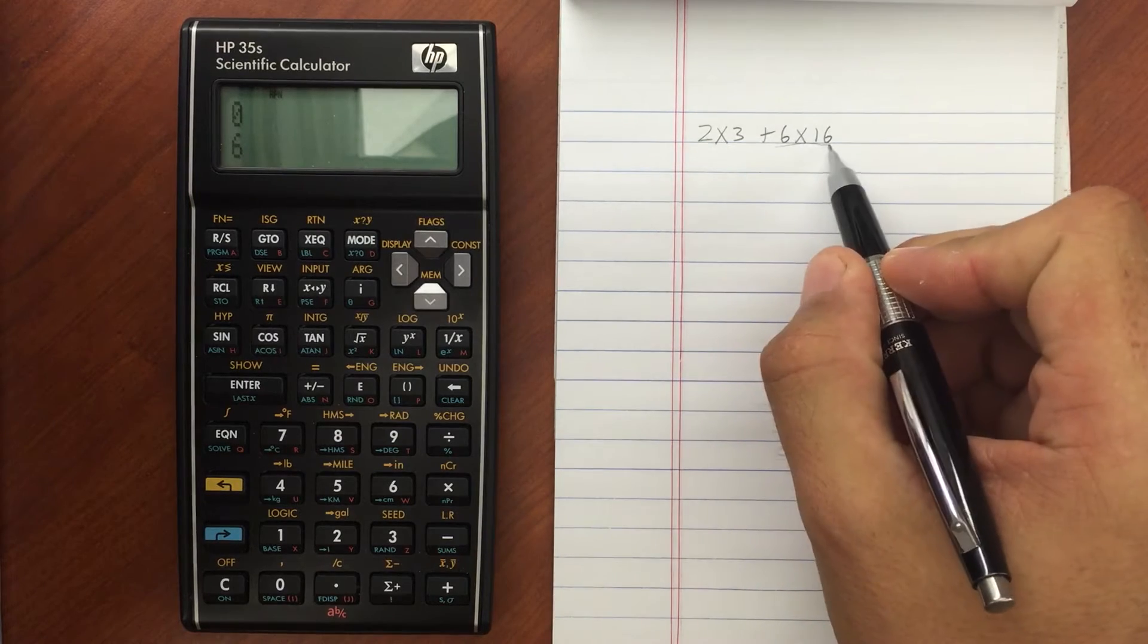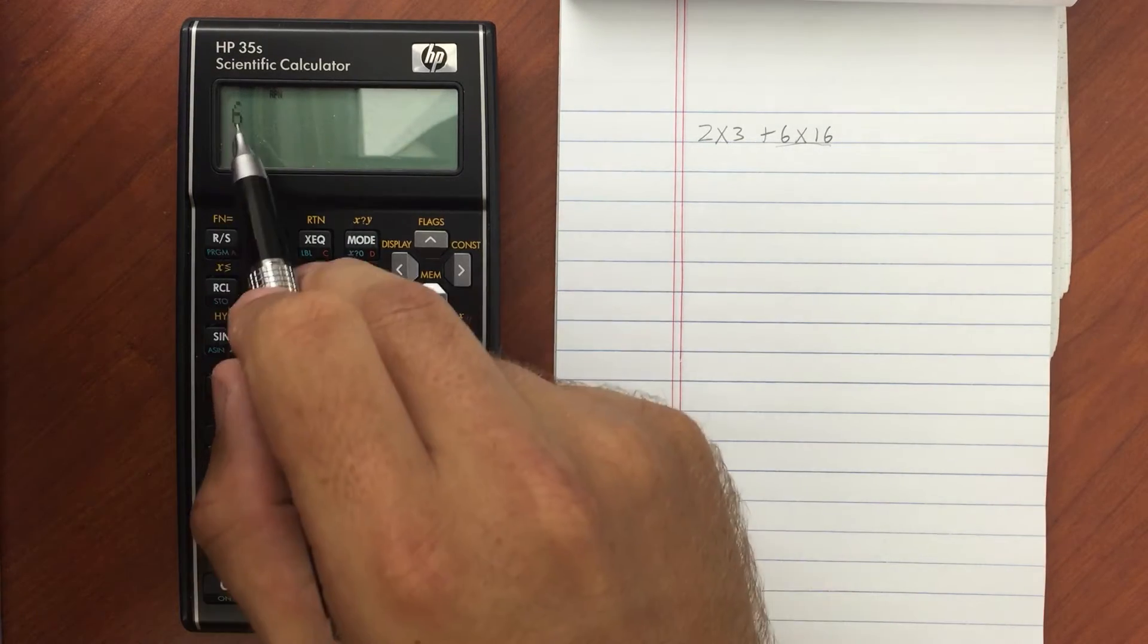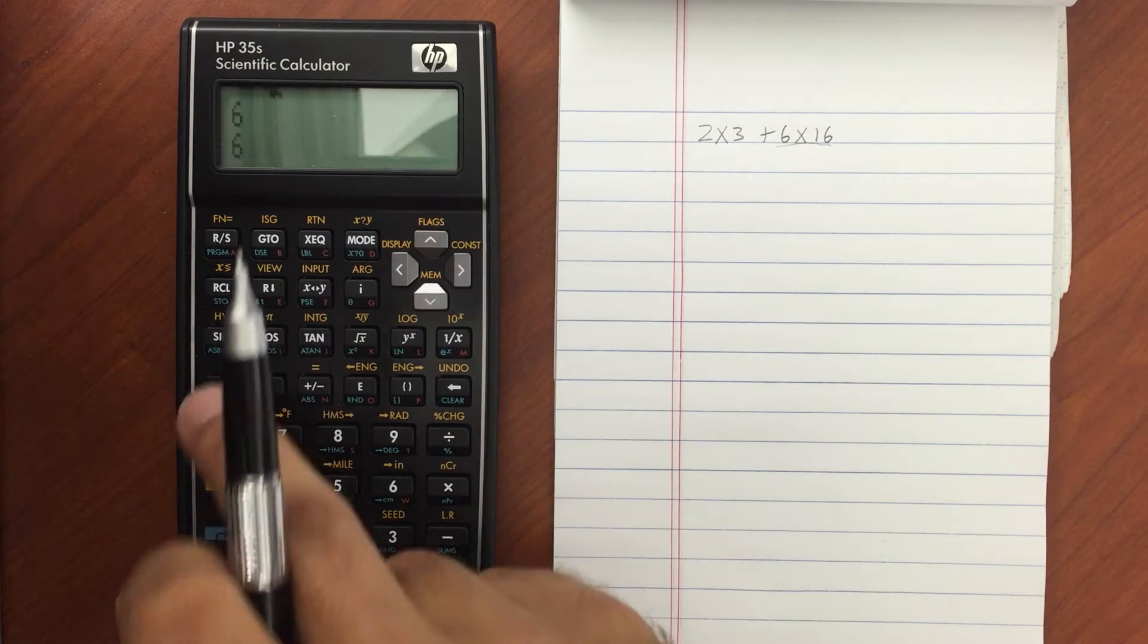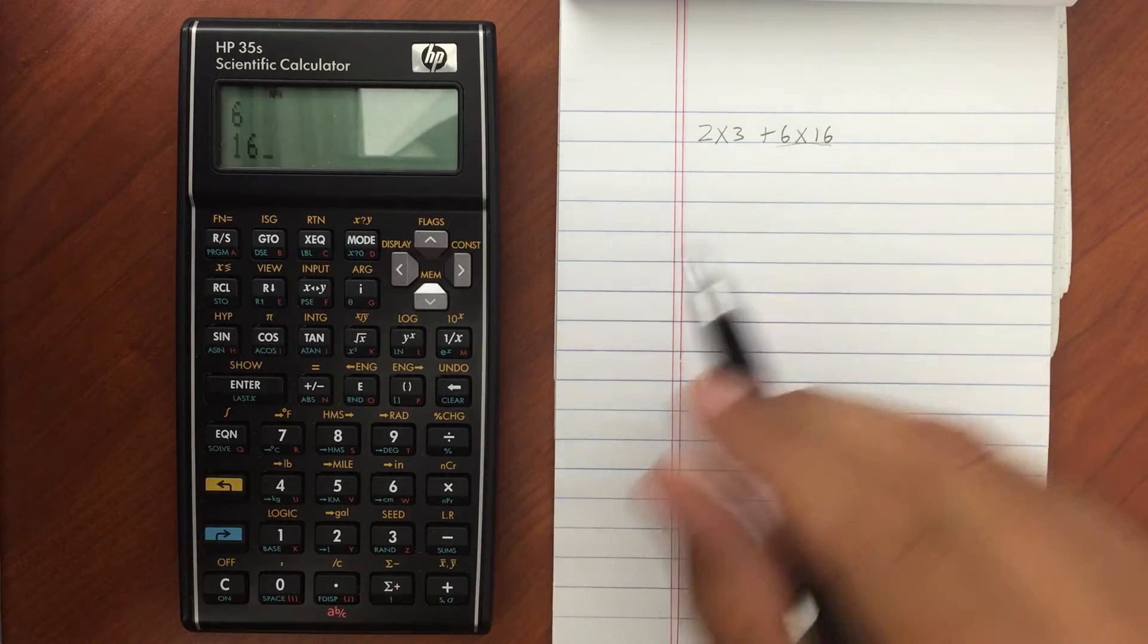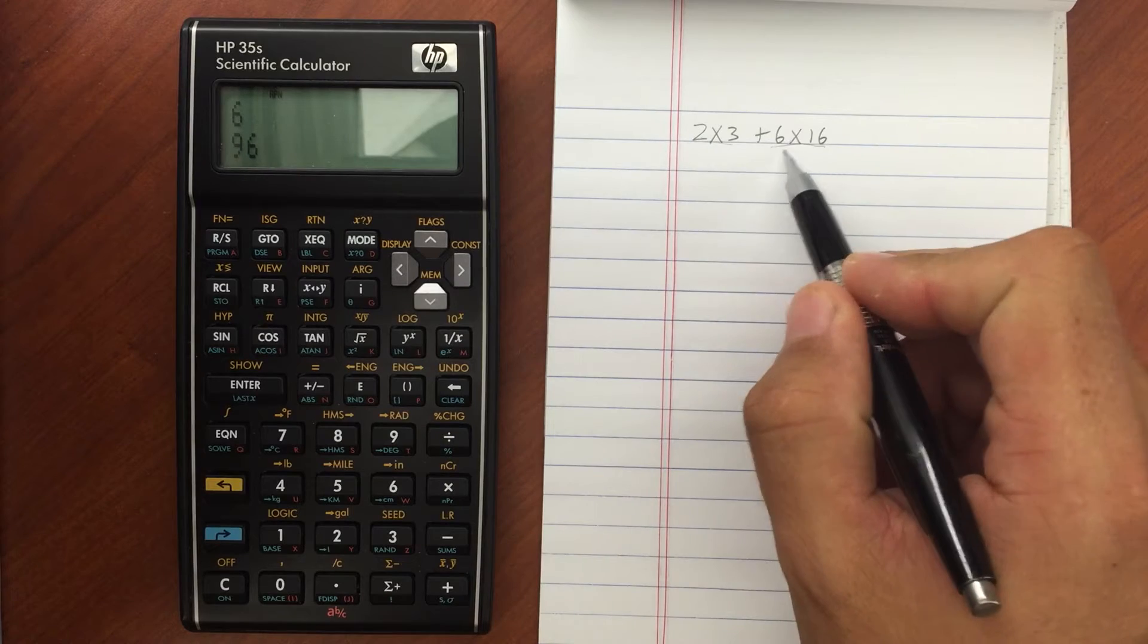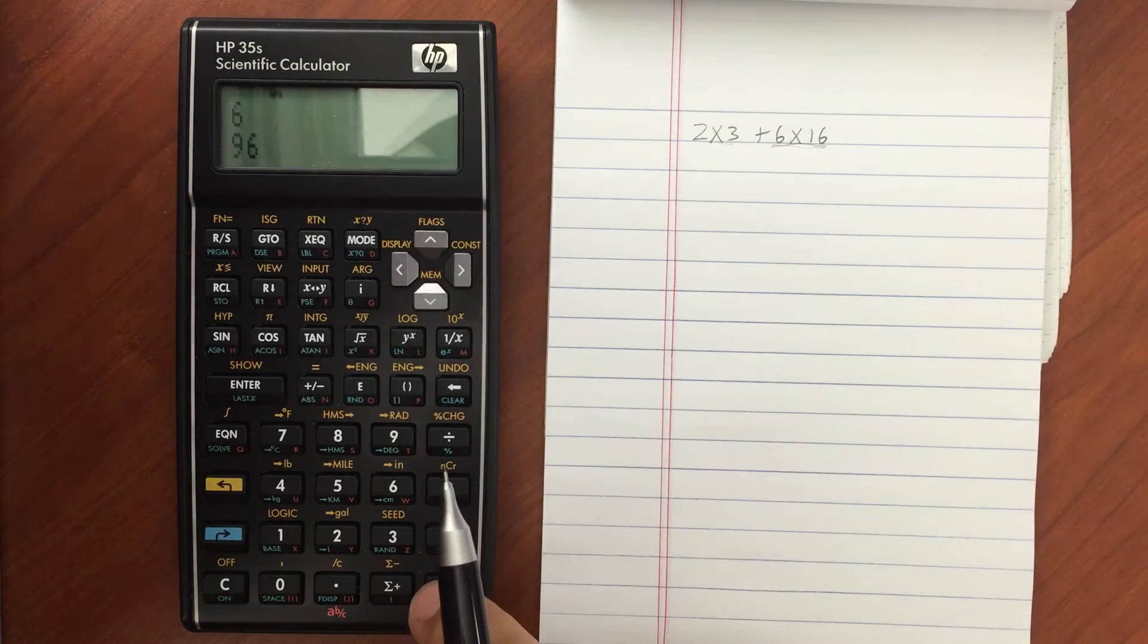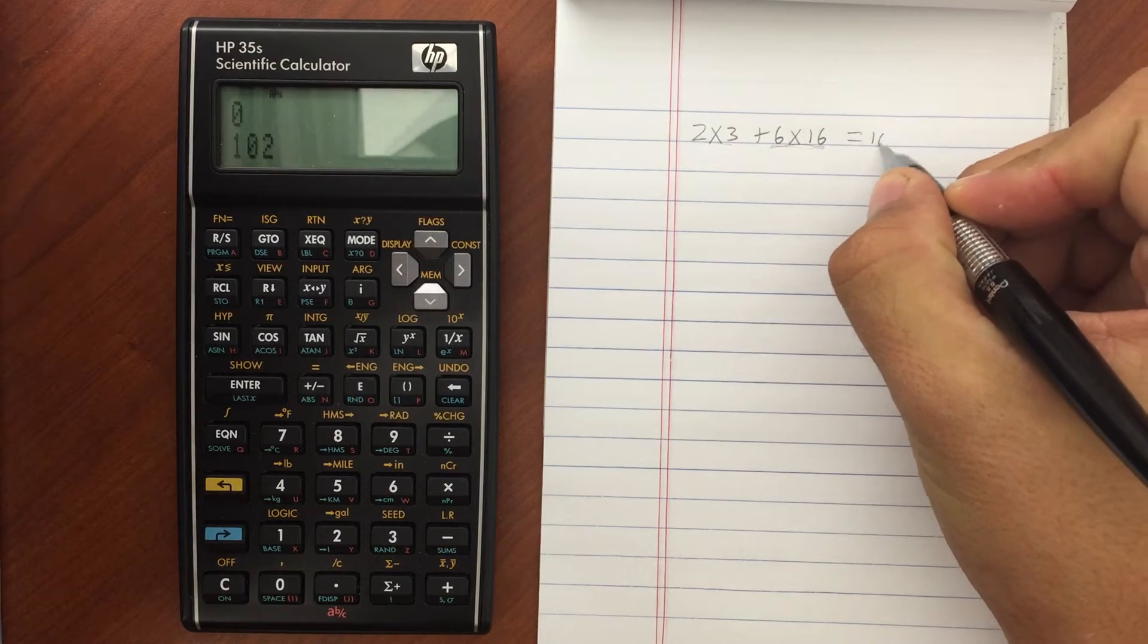For the next segment here, I'm going to hit enter 6. So I've got another 6 in there. Hit enter. Then 16. Multiply those together. And then add my first 6 to my result here. So hit plus. And my final answer is 102.